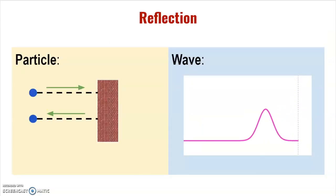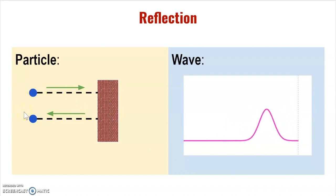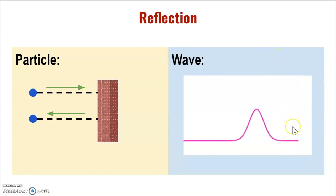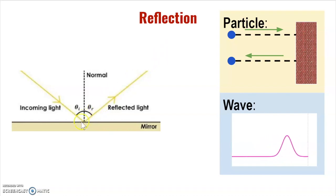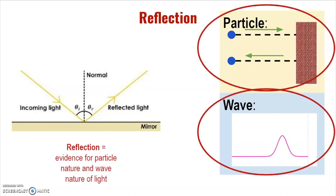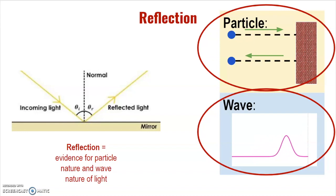Let's look at reflection. If a particle reflects off a surface, it bounces back in the direction it came from. Waves reflect in a similar fashion — a wave hitting a boundary goes back in the direction it came from. When light reflects, the angle of incidence equals the angle of reflection. This shows that reflection provides evidence for both the particle and wave nature of light, since both a particle and a wave would reflect in the same way.